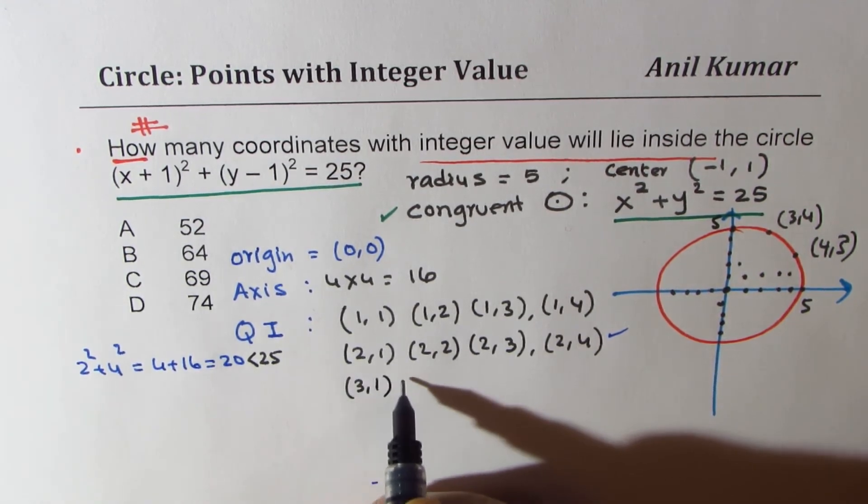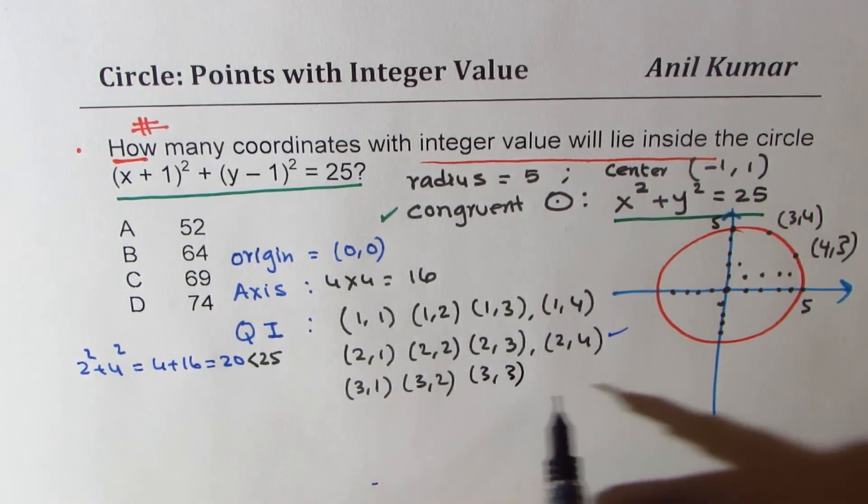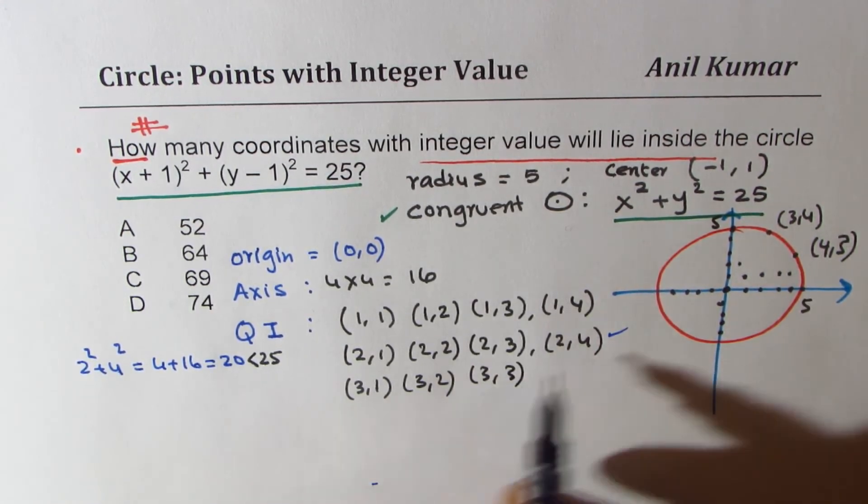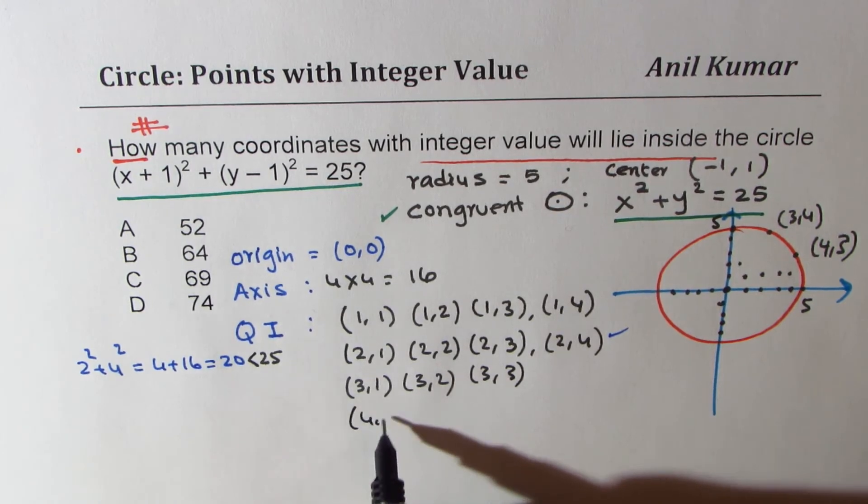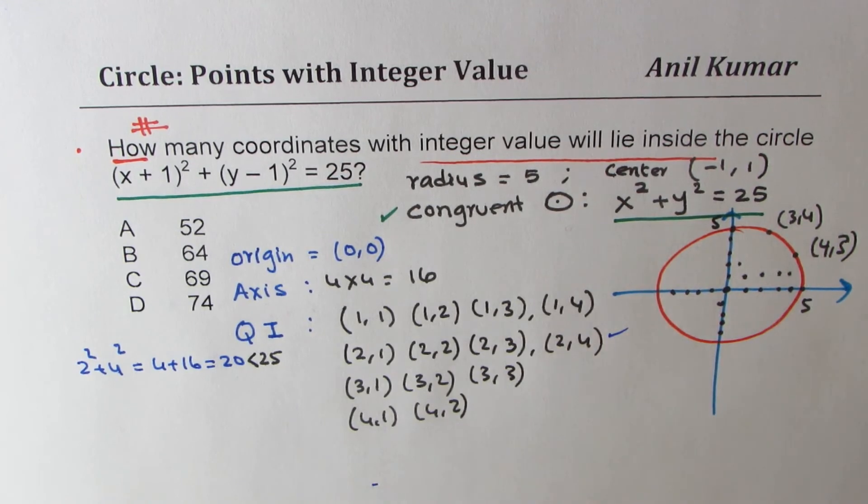This has to be less than 25. That's what we are looking for. Then (3, 1), (3, 2), (3, 3). (3, 4) is on it. We know it. So let's forget about it. (4, 1), (4, 2), and (4, 3) is also on it. So that is how we do get all our list.